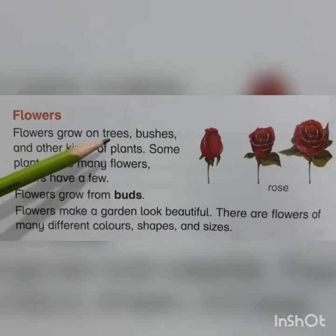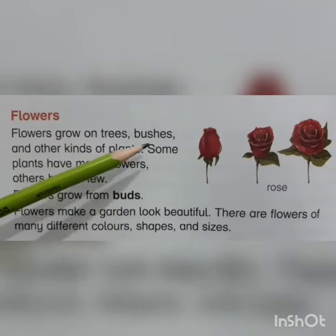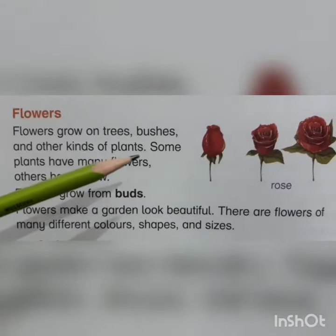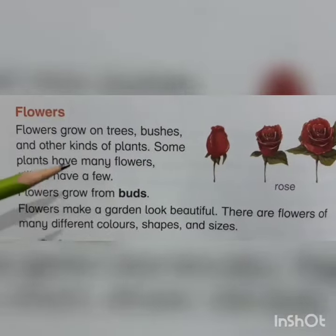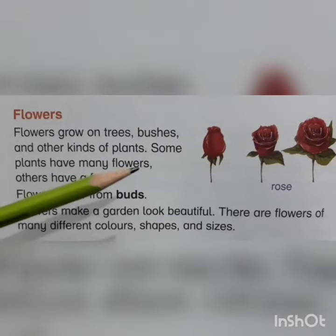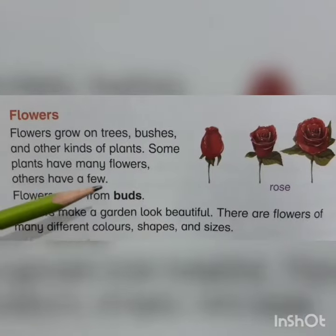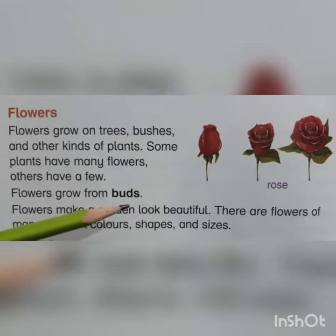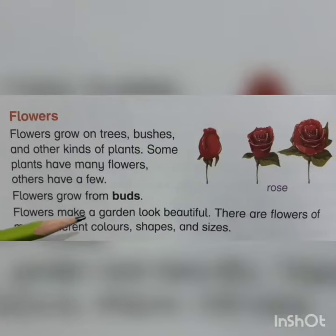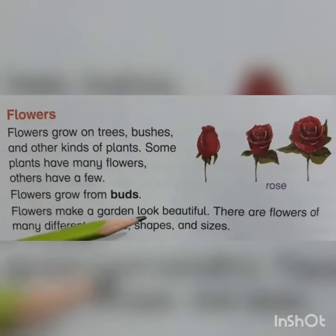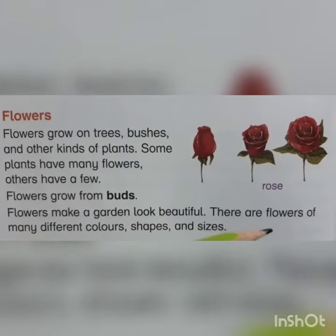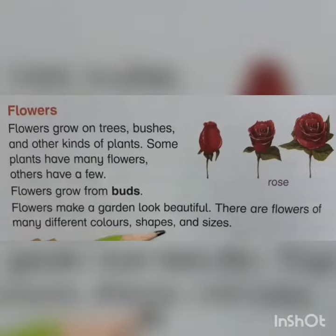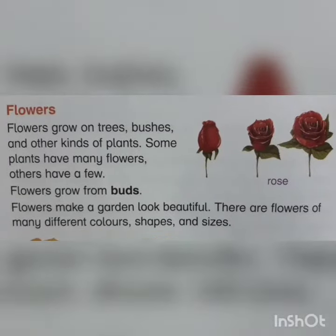Flowers grow on trees, bushes and other kinds of plants. Some plants have many flowers, others have a few. Flowers grow from buds. Flowers make a garden look beautiful. There are flowers of many different colors, shapes and sizes.